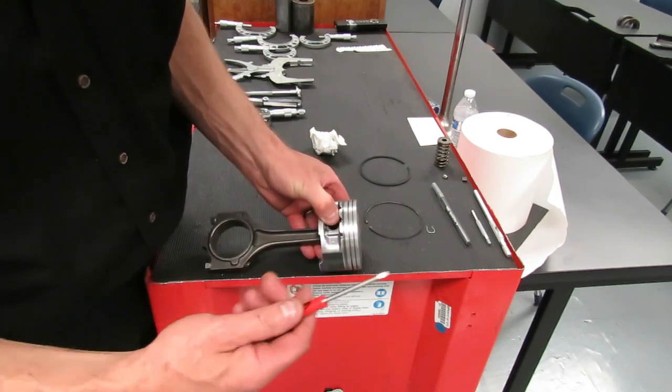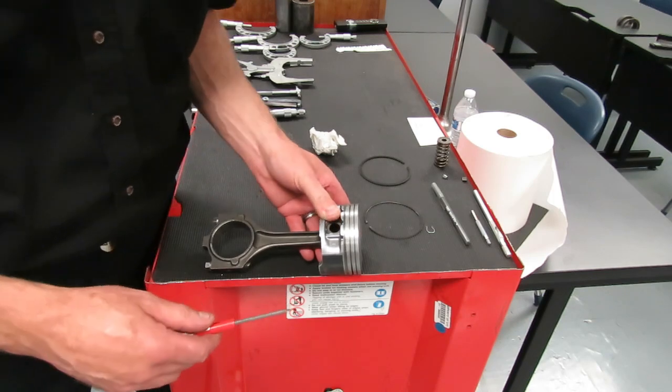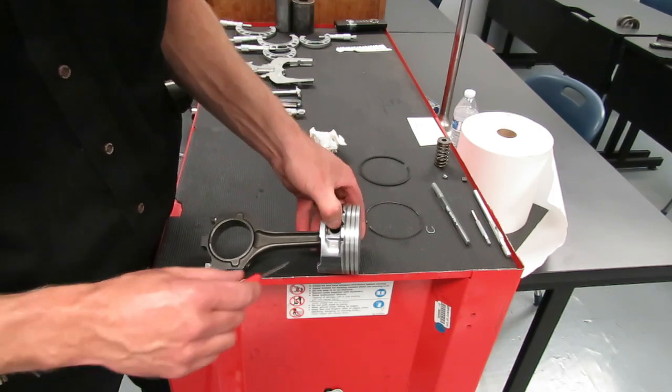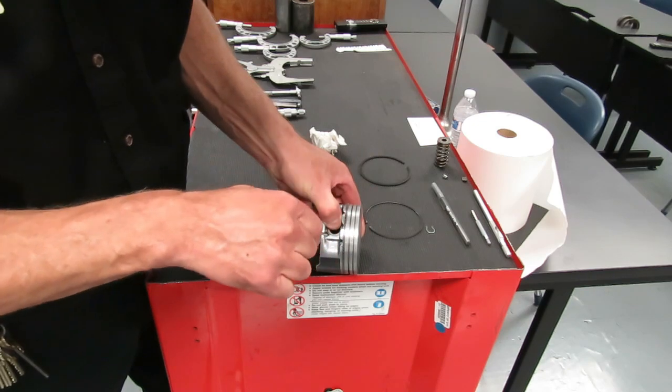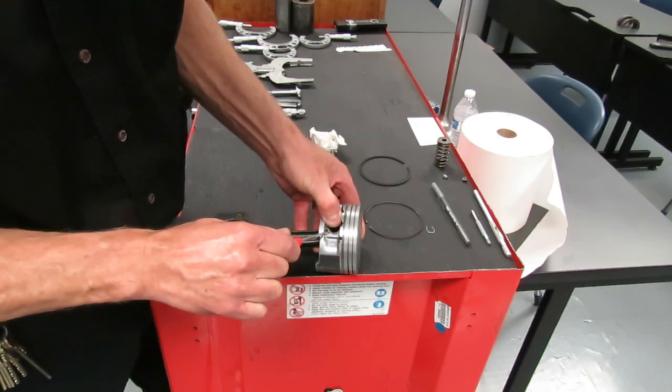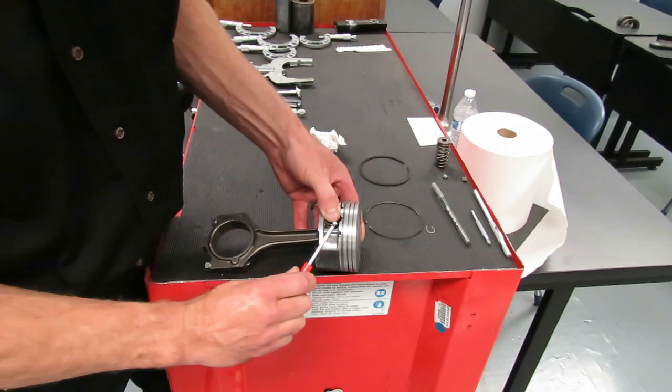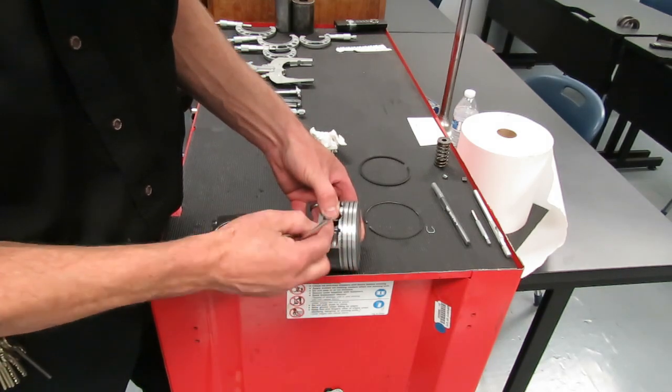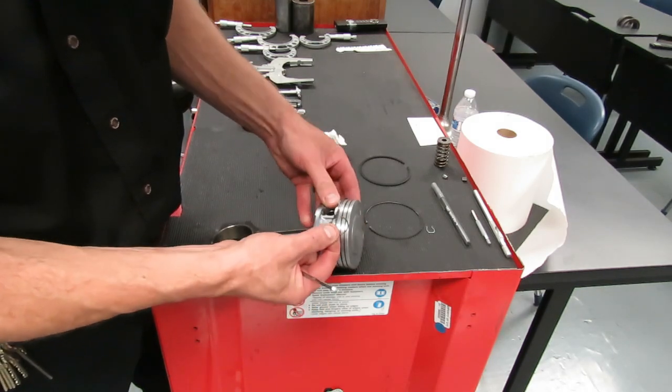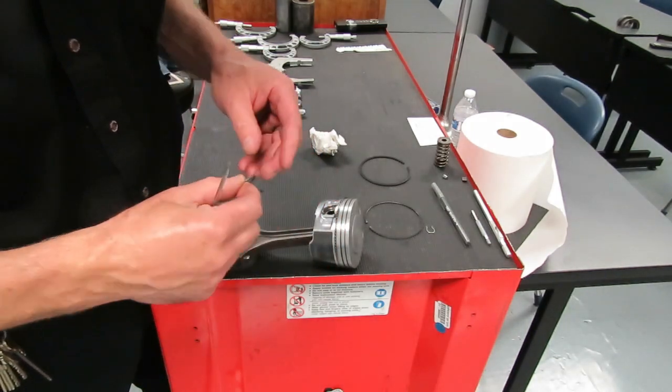Otherwise, that C-clip is going to shoot across the shop and you're going to be crawling around on the floor looking for it. So we're just going to take our screwdriver, get in behind the C-clip, and we're just going to very carefully pry the C-clip out. Notice how I've got my thumb over it here, so it's not going anywhere. That is your C-clip.